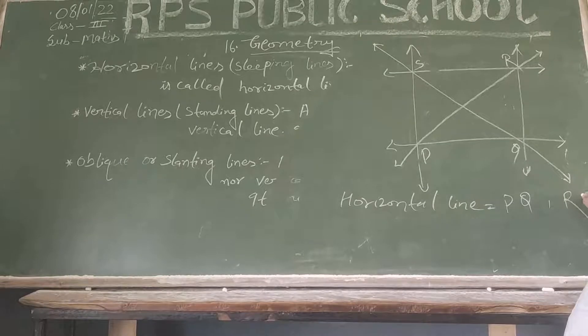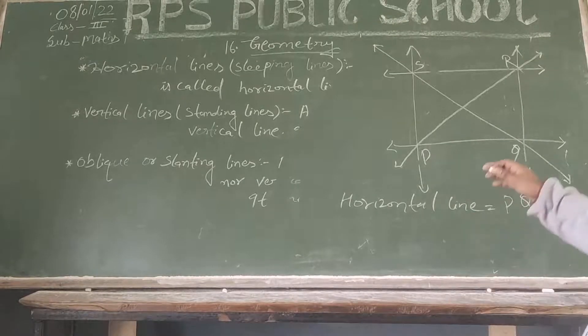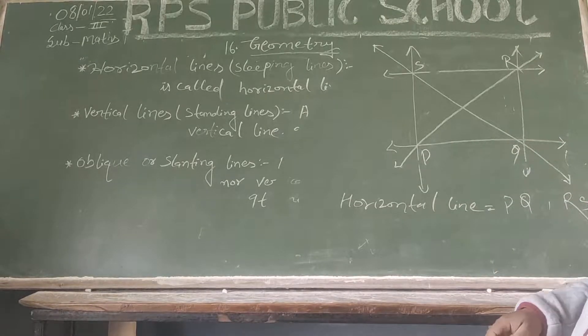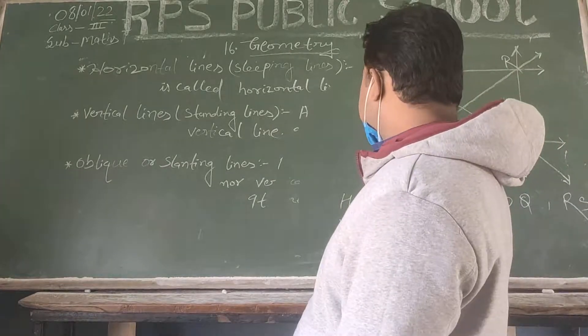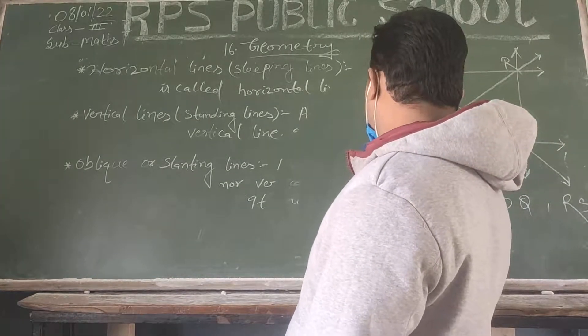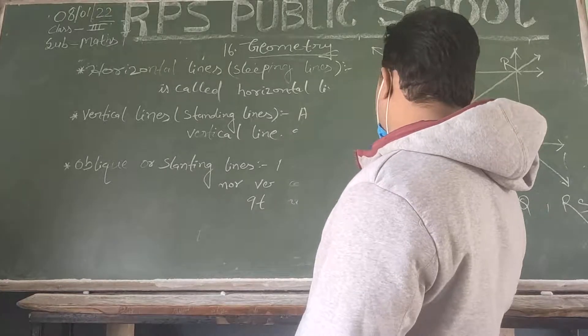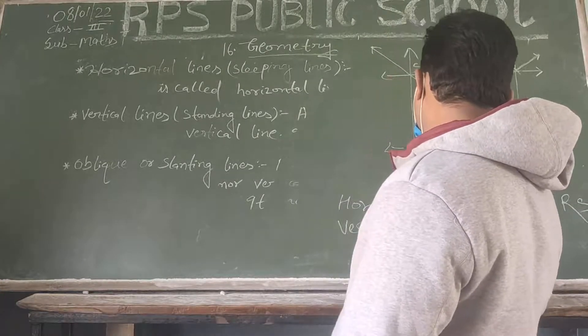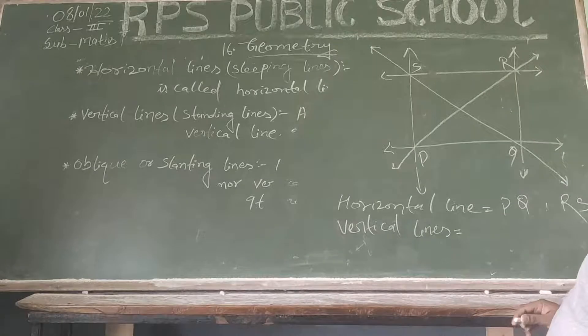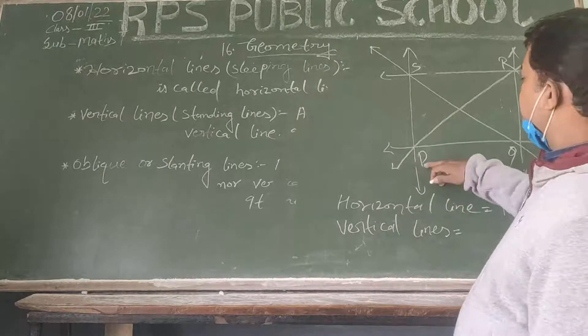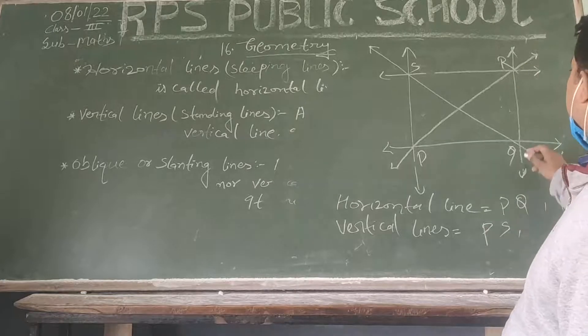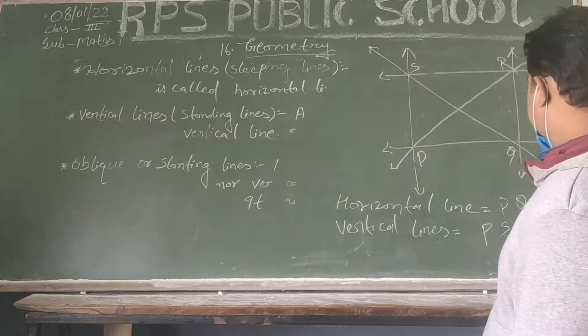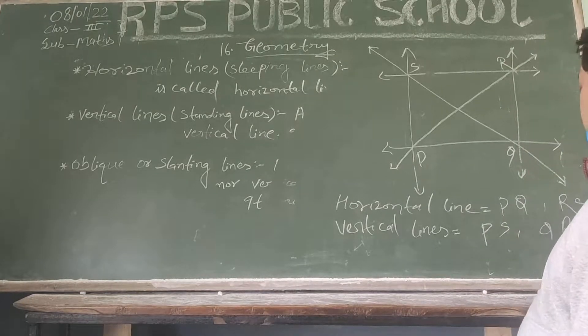Which is vertical line? R-S. And which line is horizontal? This is the slanting line. And then, the vertical line is P-S-Q-R.